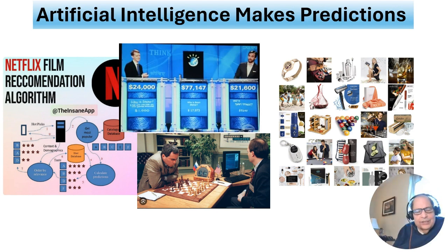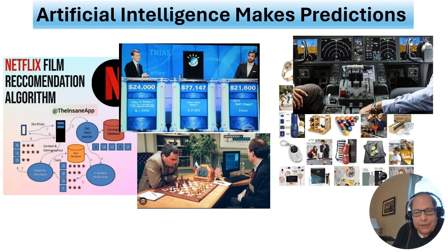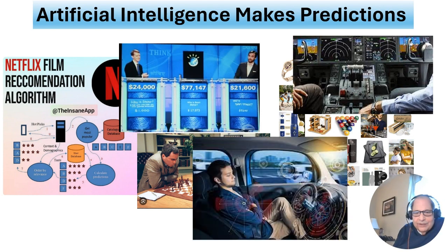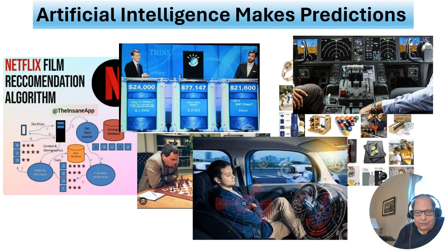Amazon is constantly sending me — and I'm sure you too — product recommendations of things we would probably like. This is an example of artificial intelligence. When you get in a plane flying on autopilot, it's gathering up information and making predictions of what to do based on that information — looking at its gauges, speeds, cameras, and all that. Or you've got self-driving cars using cameras and radar, driving down the road.